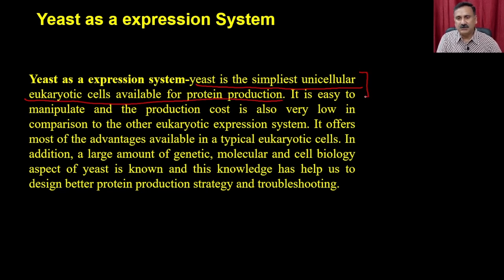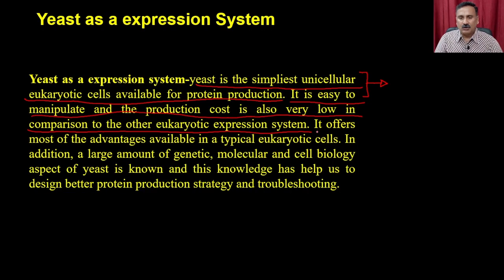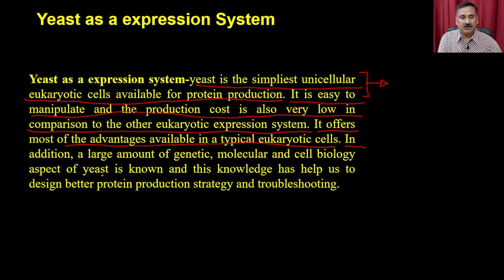The manipulations in the case of yeast are very simple because they behave just like bacteria since they are unicellular, but they have eukaryotic cell-like features. It is easy to manipulate and the production cost is very low compared to other eukaryotic systems. You can use multiple chemical methods to deliver the gene of interest into the yeast cells. It offers most of the advantages available in a typical eukaryotic cell - it has a nucleus and all other organelles, and it can also provide glycosylation of the protein.